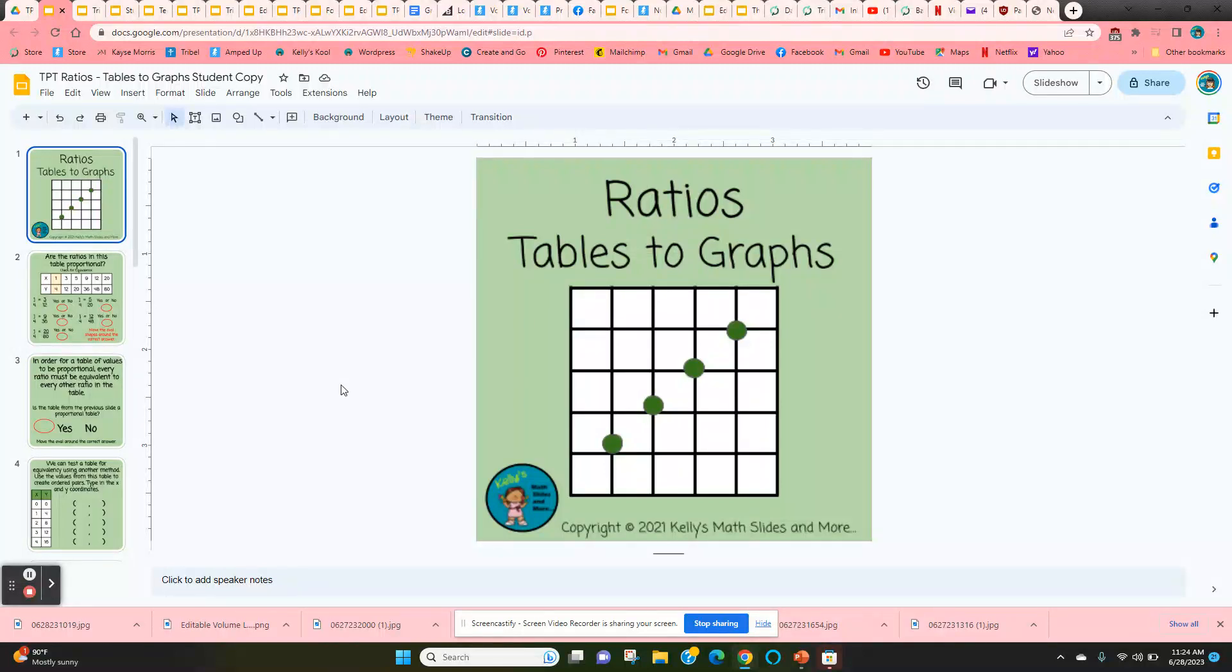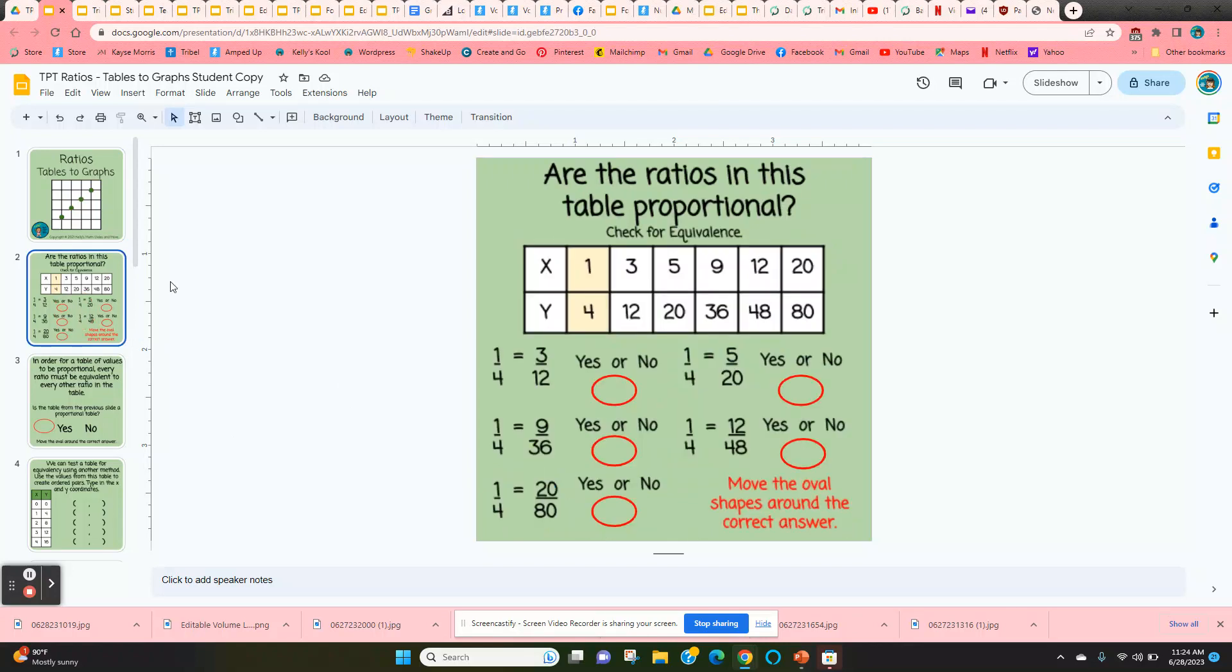Ratios, tables to graphs. This is a digital lesson, so it starts on slide two with a table, and students need to determine whether this table is proportional. They're given the x and y values, so what they need to do is move these red circles around yes or no. We're checking for equivalency: is 1 to 4 equivalent to 3 to 12? Students are going to move the circle around yes.